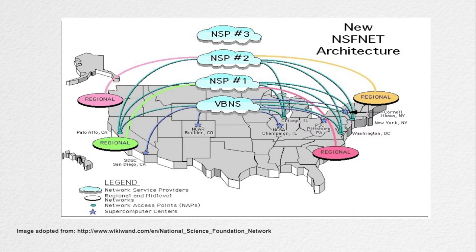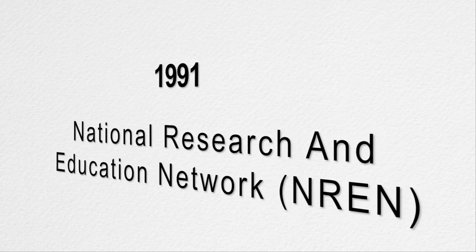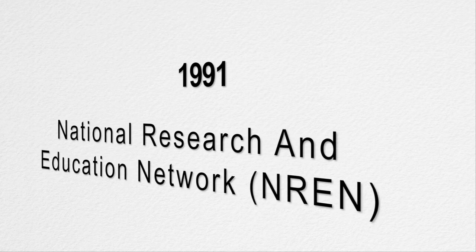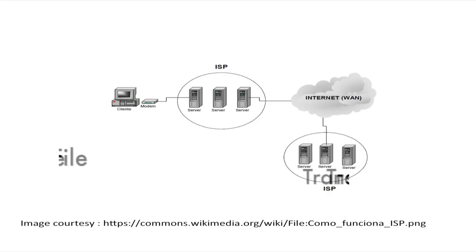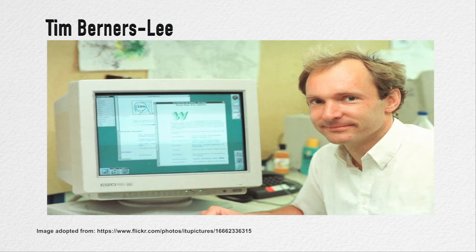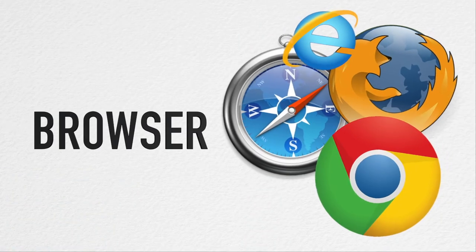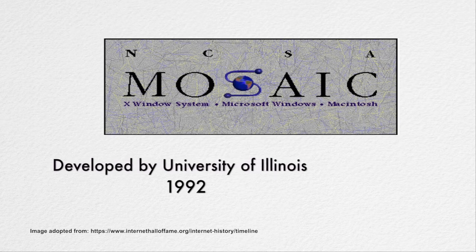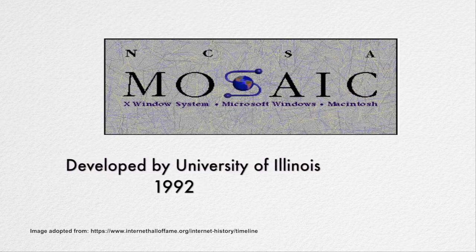Now the internet could carry commercial traffic, and more and more universities and research centres throughout the world were connected to it. In 1991, the National Research and Education Network known as NREN was founded and the World Wide Web was released. Initially, the role of internet was only limited to file transfer. The credit for the internet as we see it today goes to Tim Berners-Lee, who introduced the World Wide Web. With the advent of WWW, there was a transformation in how the network was used. Software called a browser was developed to browse the internet. It was developed by researchers at the University of Illinois in 1992 and named Mosaic, enabling browsing the internet the way we do today.